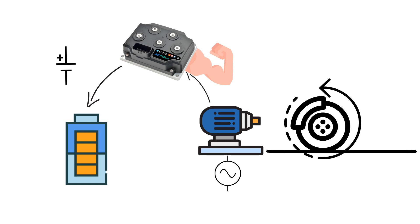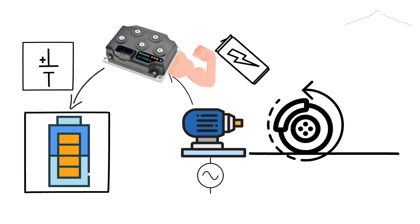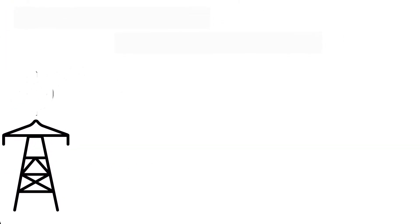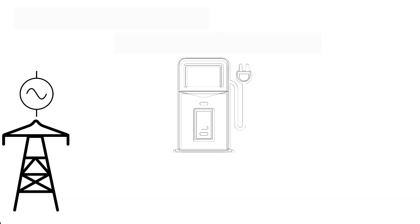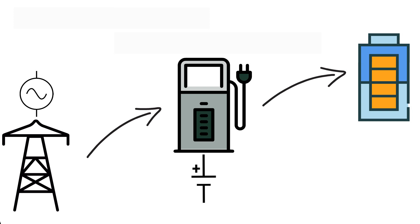We need to provide energy to drive the motors, so we use a battery which stores DC power. Before storing, we need to replenish the energy into the battery pack — that energy comes in the form of electricity from the grid. However, we get AC supply from the grid and we cannot store AC electrical energy into the batteries. That's where the electric vehicle charger comes in: it converts AC power into DC, which we are able to store into the battery pack.